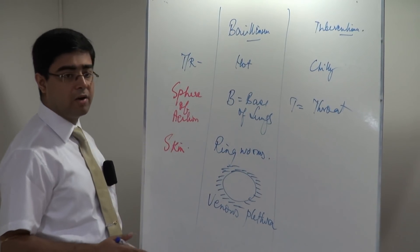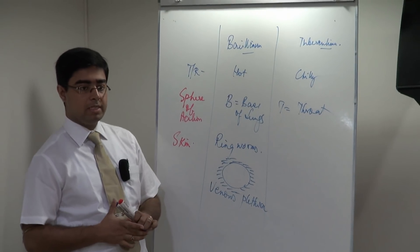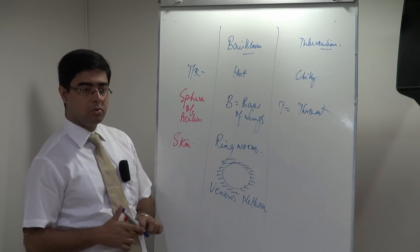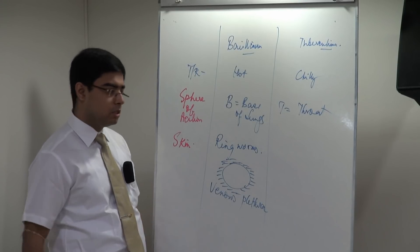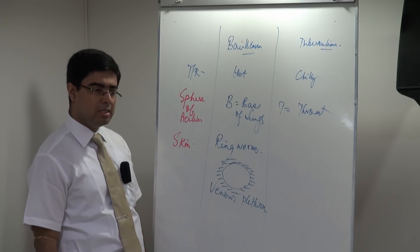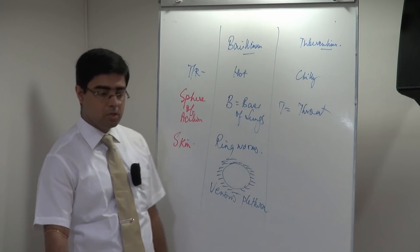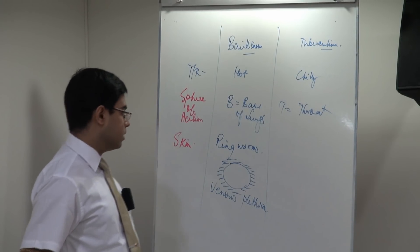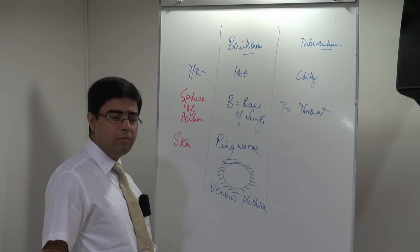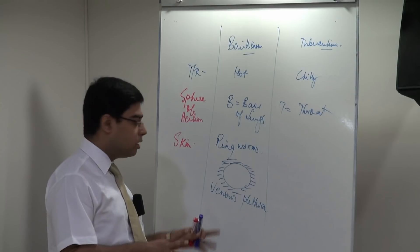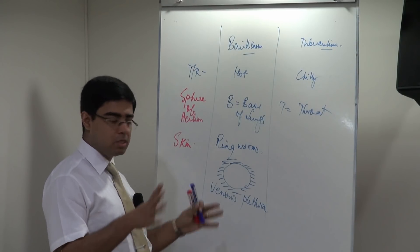There is a book by Sheila Creasy on Tuberculinum and Bacillinum where she mentions the difference between the two. Ringworms with local venous plethora — the plethora is a rush of blood, more venous blood surrounding the ringworm lesion.